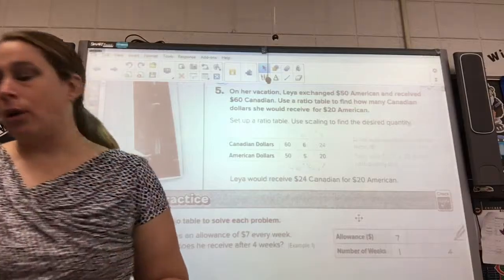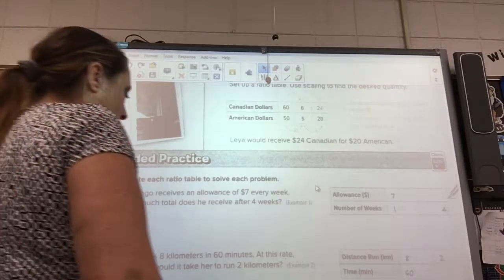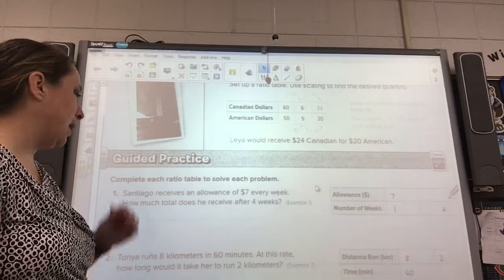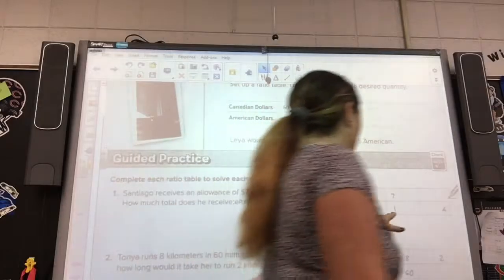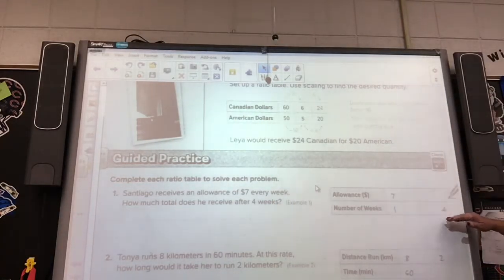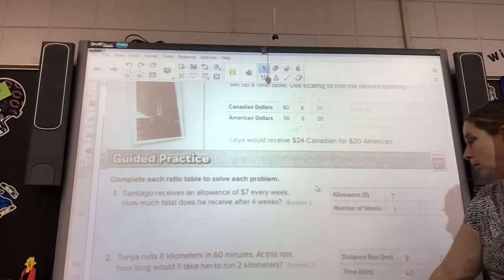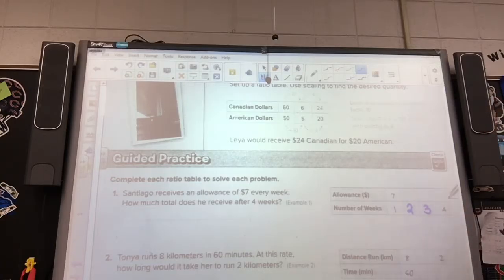All right. If we move down to our guided practice, one thing that I want you to know is no matter what, if you do the same on the top and the bottom, you're okay. So this example tells us that San Diego receives a lot of $7 every week. How much does it receive after 4 weeks? And they give us 1 and week 4, and they gave us 2 boxes in between. So logically, if it's 1 blank blank 4, what would we put in there? We would just put in the weeks, right? Week 1, week 2, week 3, and week 4.